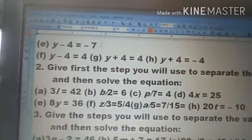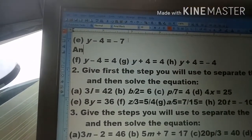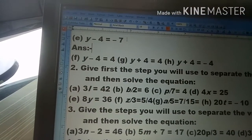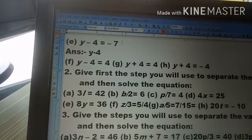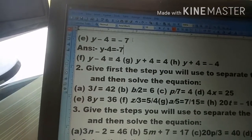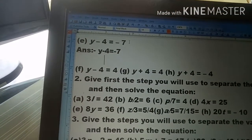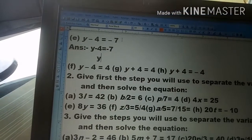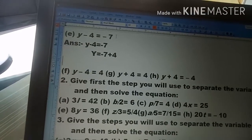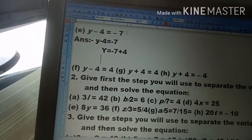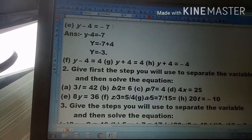Then the next question (e): y minus 4 is equal to minus 7. When minus 4 moves to the right side, it becomes plus 4. So y is equal to minus 7 plus 4, which equals minus 3.